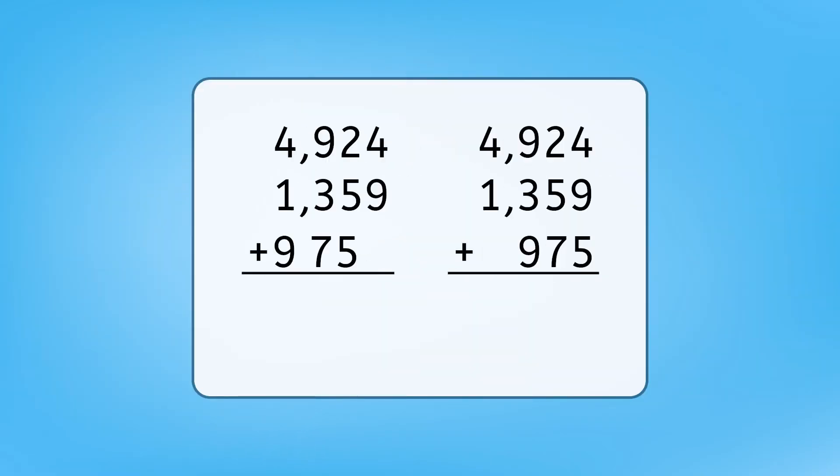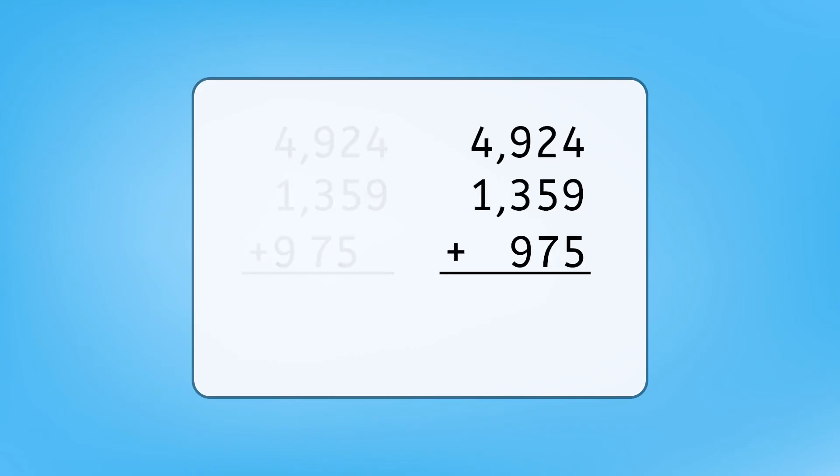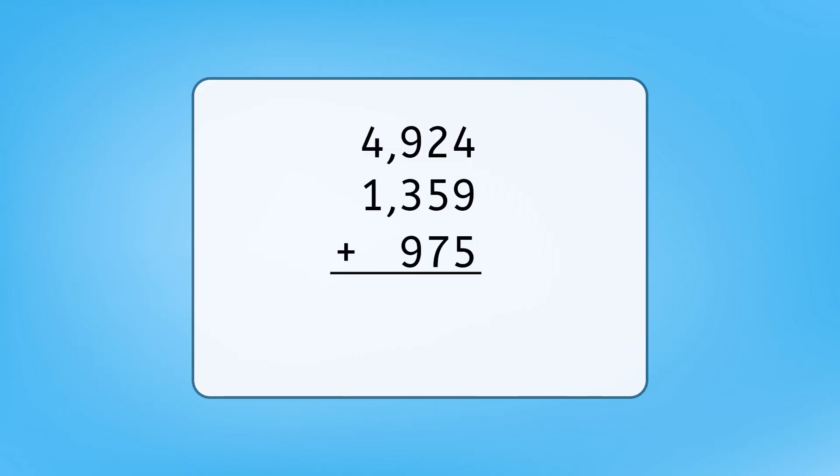I have four thousand nine hundred twenty-four and one thousand three hundred fifty-nine all lined up, but which is the correct location for nine hundred seventy-five? Since the nine is in the hundreds place, it should be lined up with my other hundreds, and then we line up tens with tens, and ones with ones. Alright, using what you've learned about regrouping and the addition algorithm, pause the video here and find the sum or the total amount.